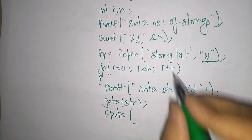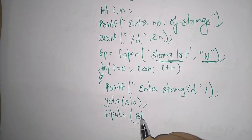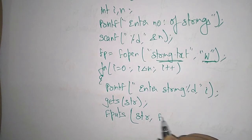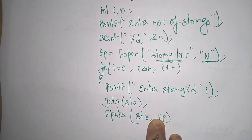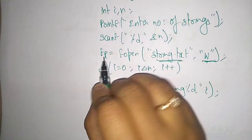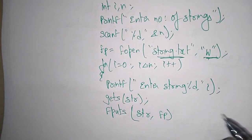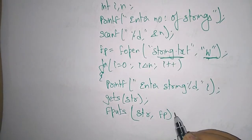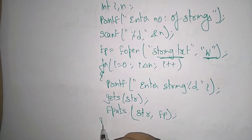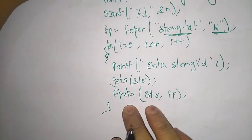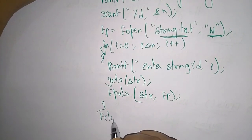So fputs(str, fp) — str is the string read from the keyboard, and fp is the file pointer. With the help of the file pointer, fputs knows the address of string.txt, goes to that address, and stores the data in the file. Close the for loop — this runs until i is less than or equal to n.